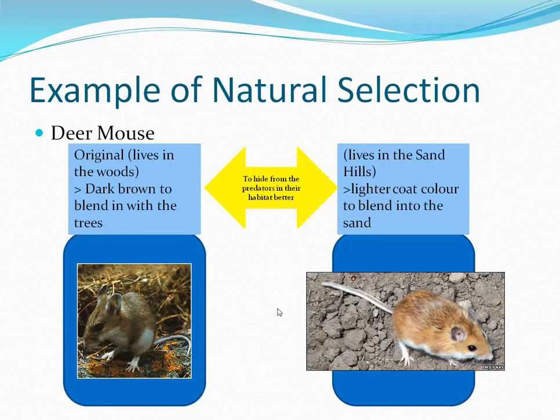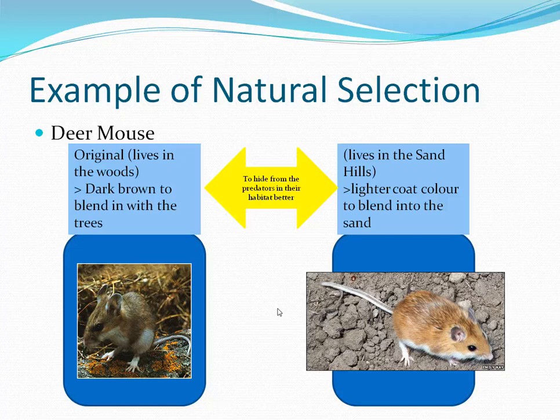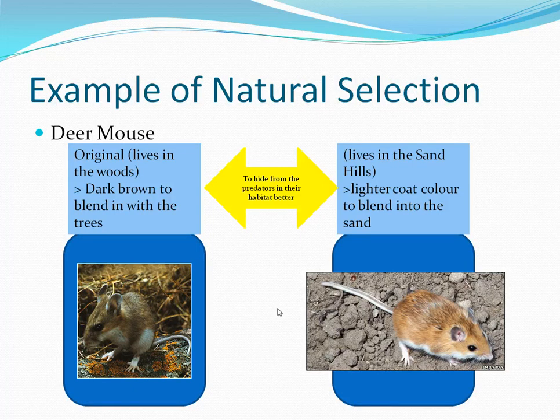Here's an example: the deer mouse is a really small mouse that normally lived in woods. On the left you can see they have a darker color so they can blend with their background. On the right is a deer mouse that would live in the sandhills — they have a lighter coat so they would be less easily spotted by their predators.